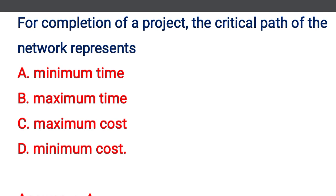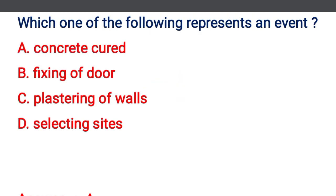Next question: for completion of a project, the critical path of the network represents — option A: minimum time, option B: maximum time, option C: maximum cost, option D: minimum cost. The correct answer is option B: maximum time.